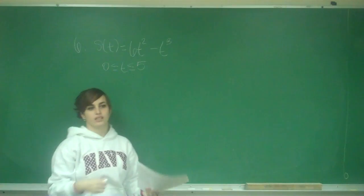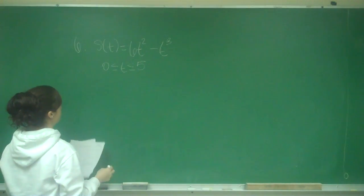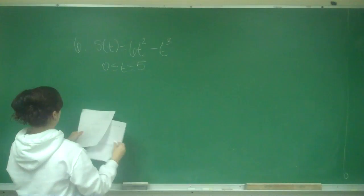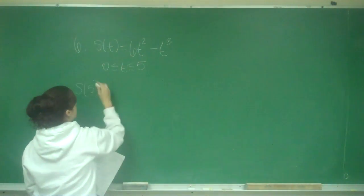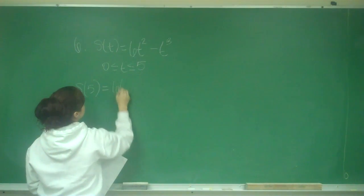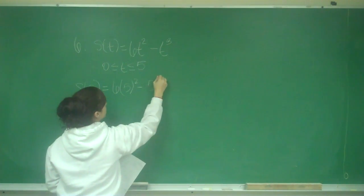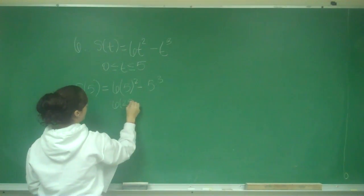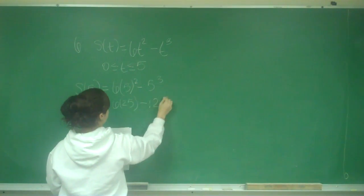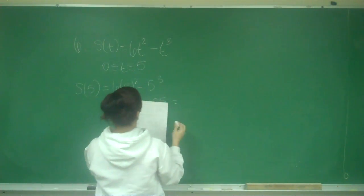So the displacement is the easier one than the total distance. So the displacement, all we are going to do is find S of 5 and plug it into our equation. So we have 6 times 5 squared minus 5 cubed. So we have 6 times 25 minus 125, and that is going to equal 25.